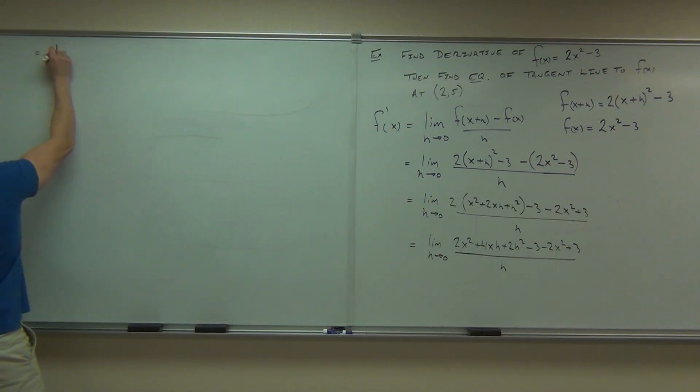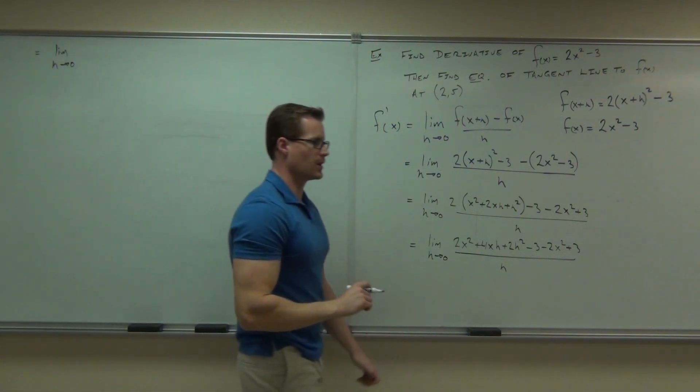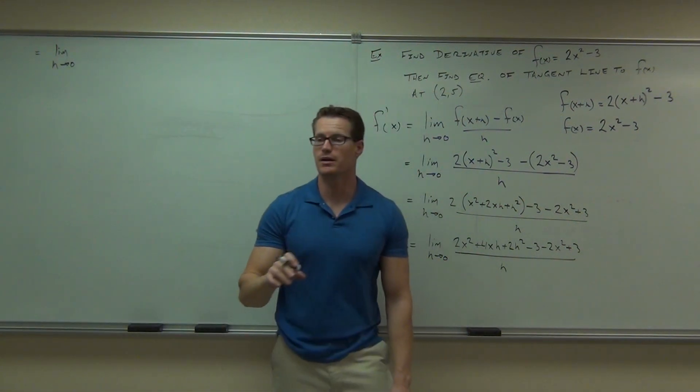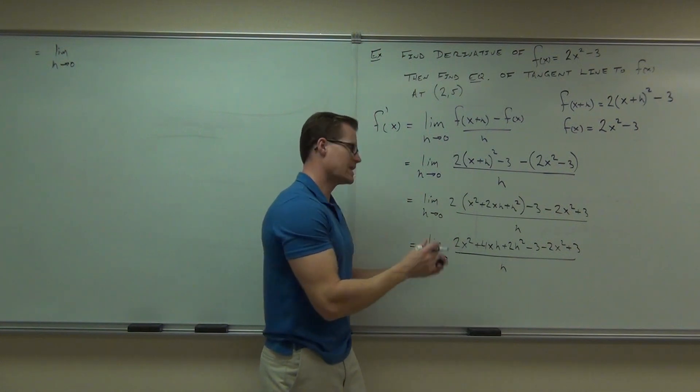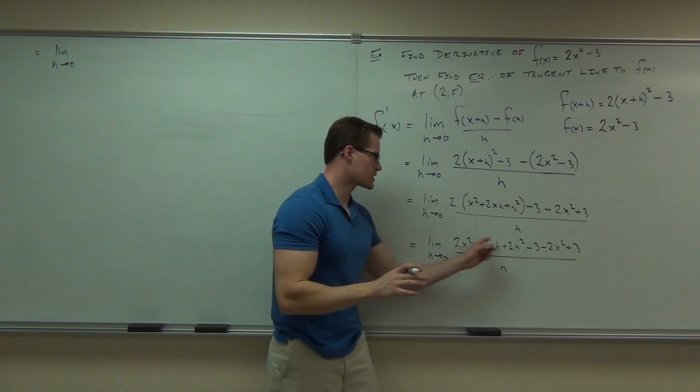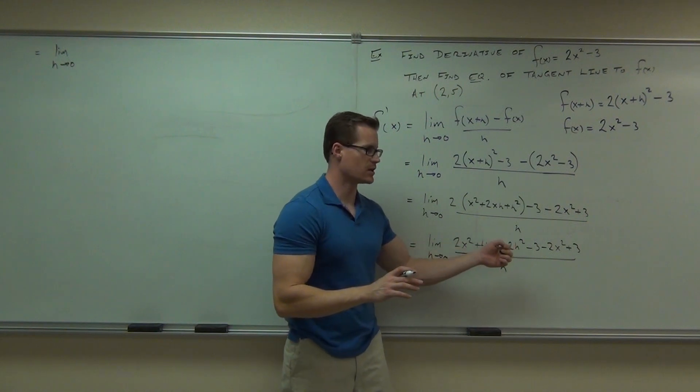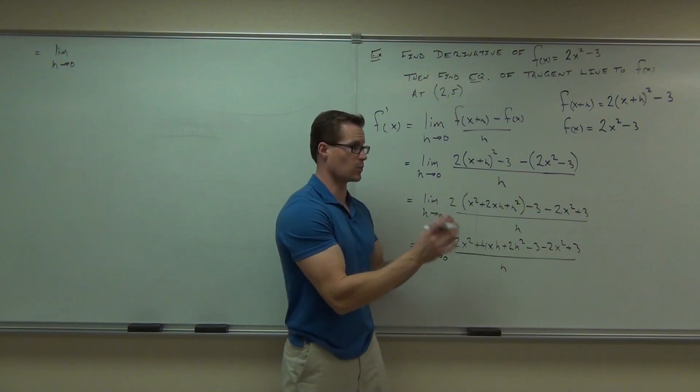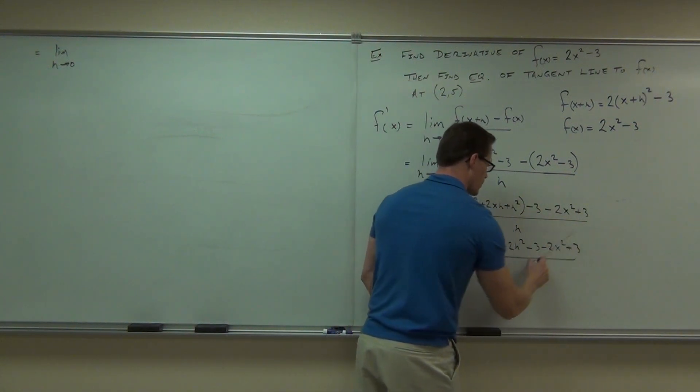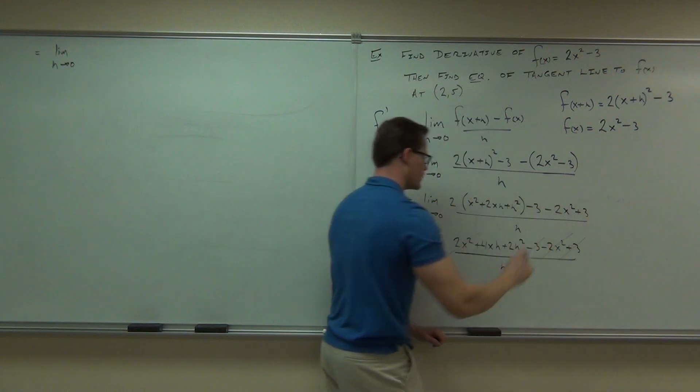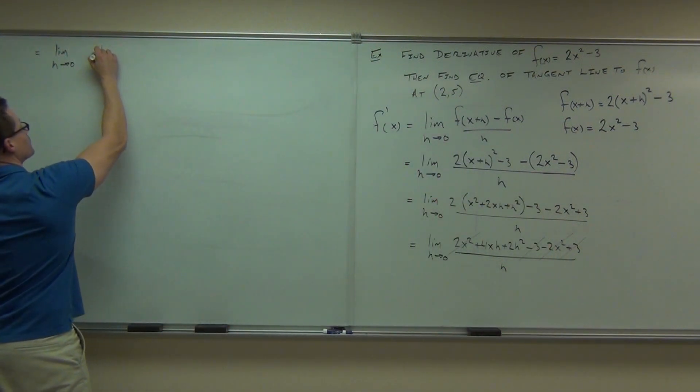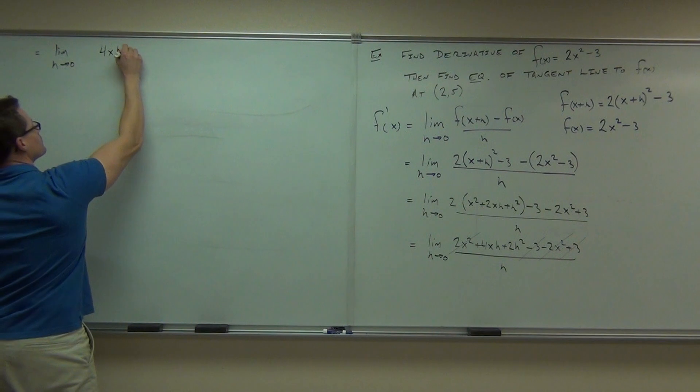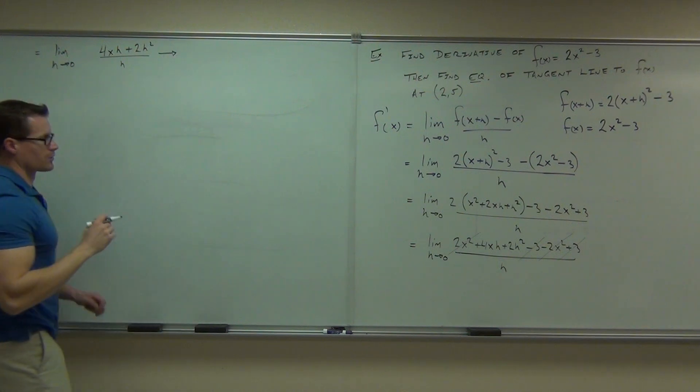So we've got a limit as h goes to zero. If I combine all the stuff, a lot of things should and must cross out. And otherwise, basically, here's the point. If you don't cross out everything that doesn't have an h in it, it's not going to work out for you. Because you're going to have to factor this h out at some point, or be able to work with it in some way. So the x squareds are gone. The 3s are gone. I get 4xh + 2h². All over h.